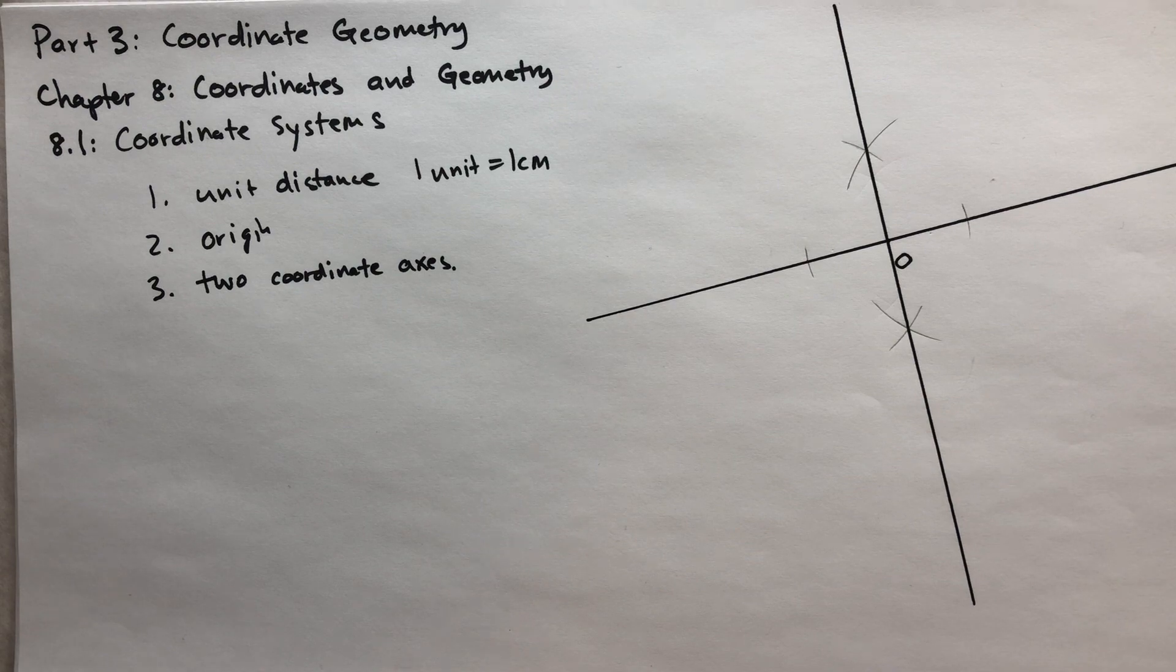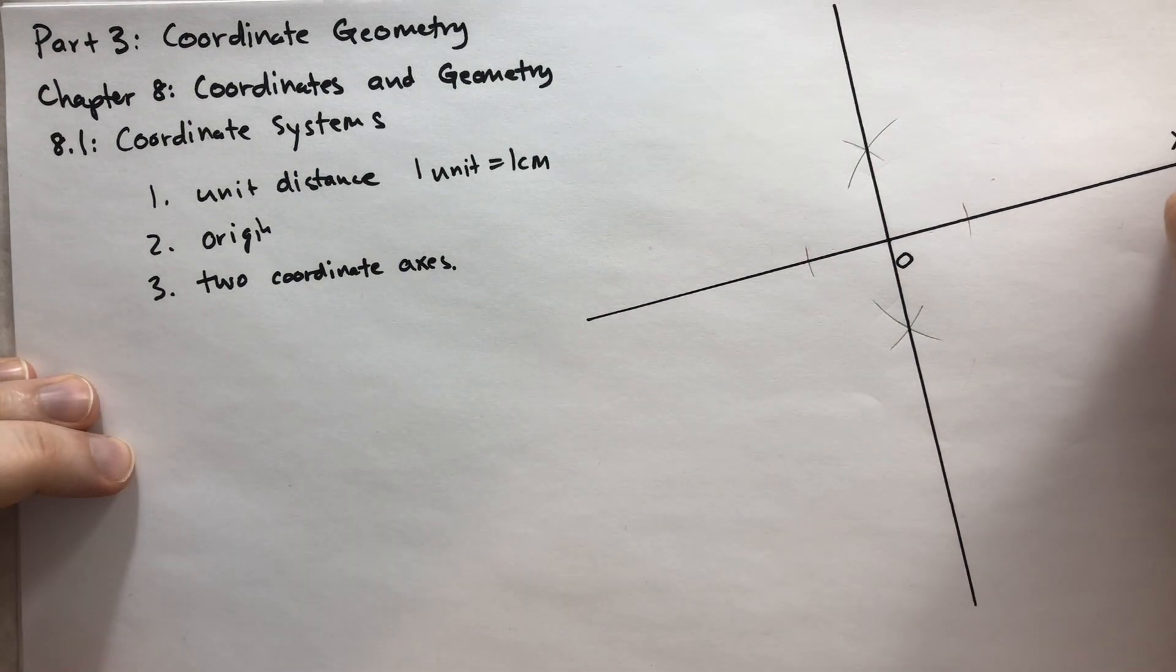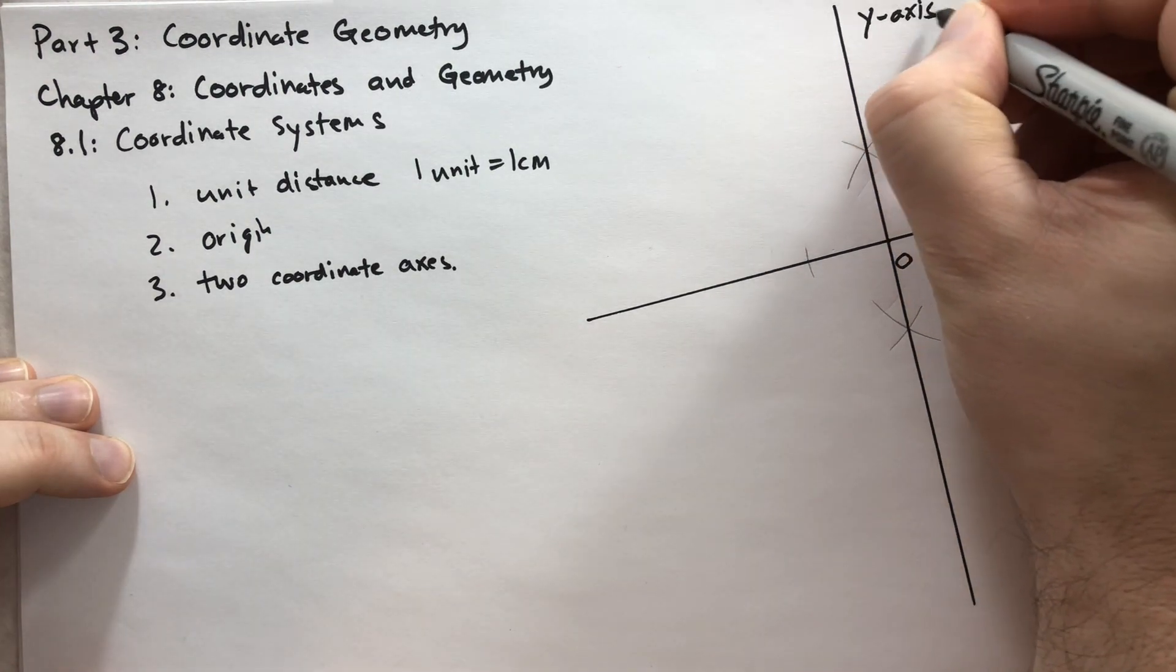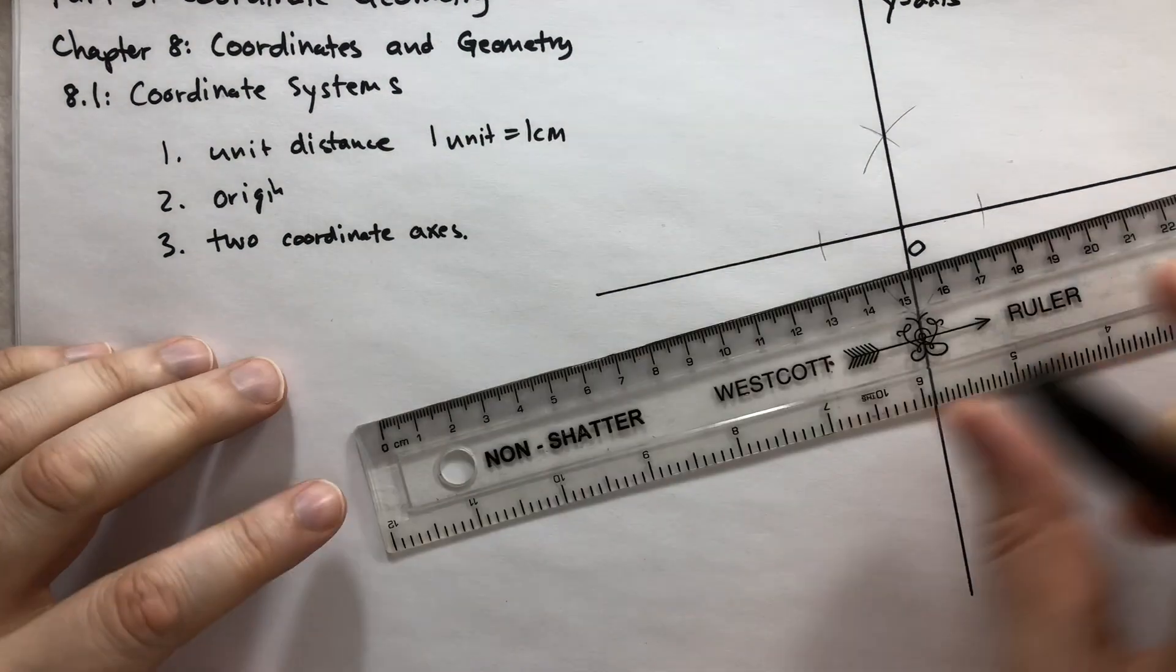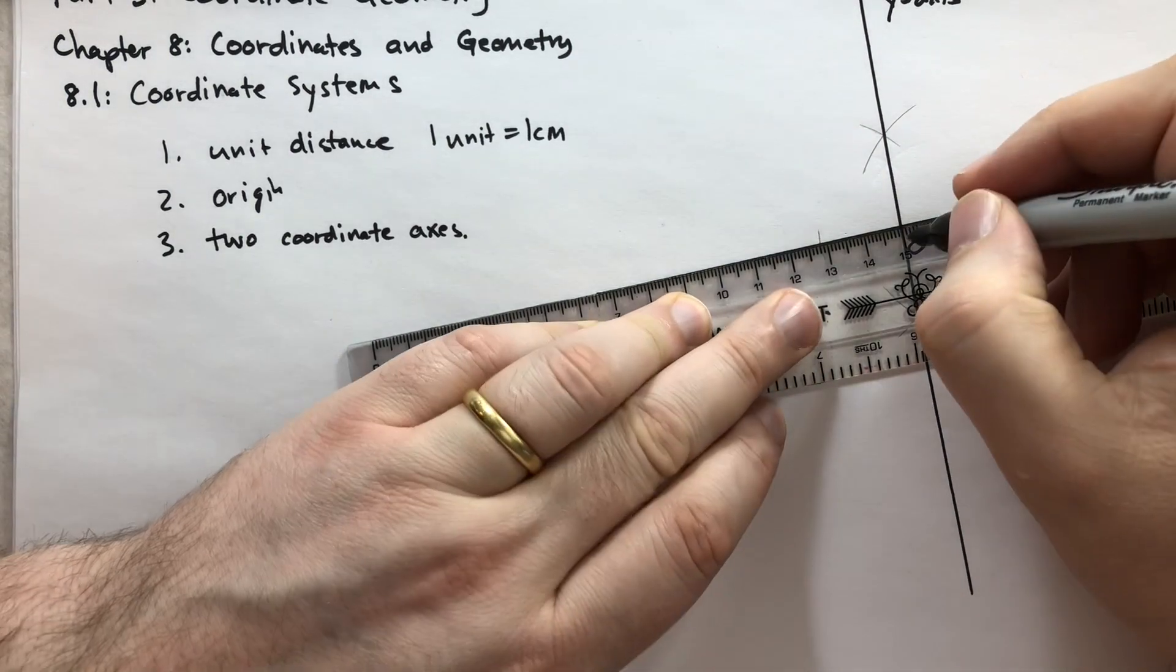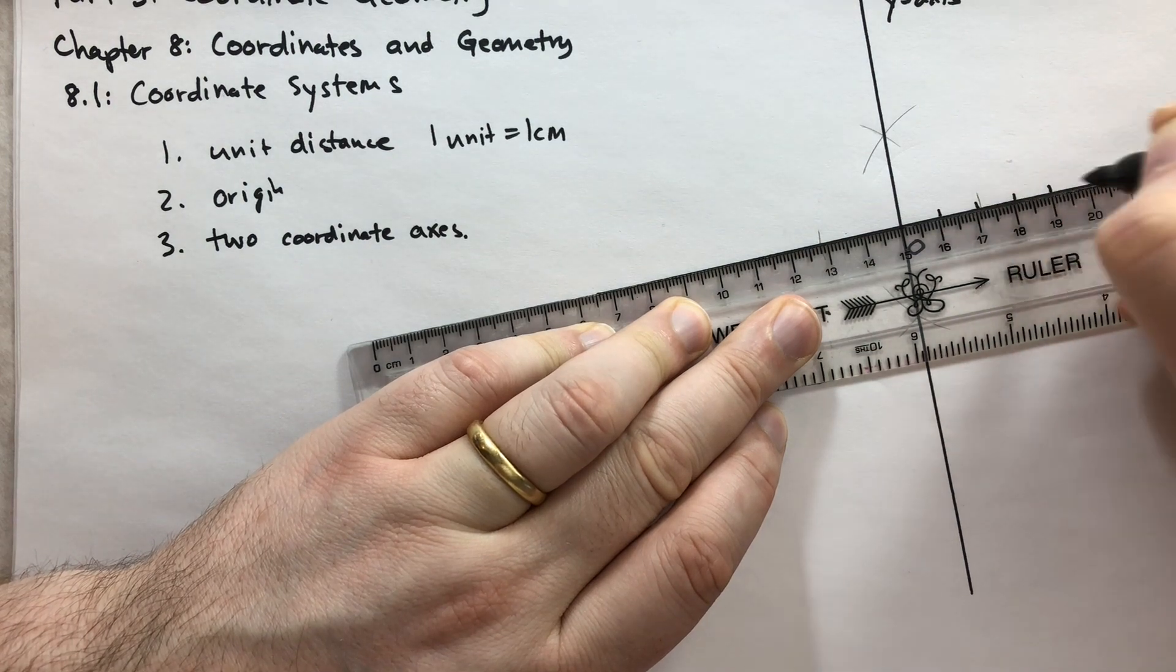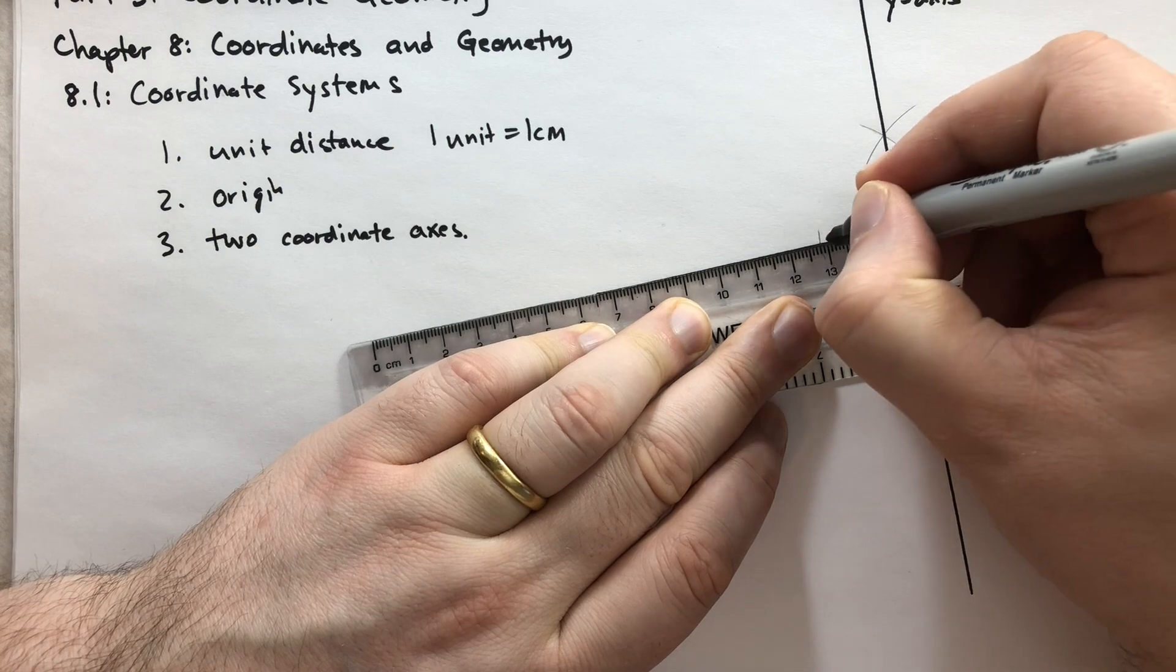So we're going to call one of these, we're going to call this the X axis. We're going to call this one the Y axis. And next we're going to do is we're going to cut it up into unit segment lengths. So we're going to go here and cut this up into unit segment lengths.